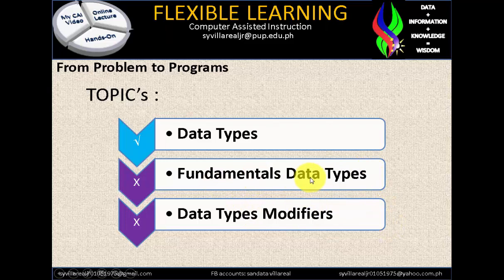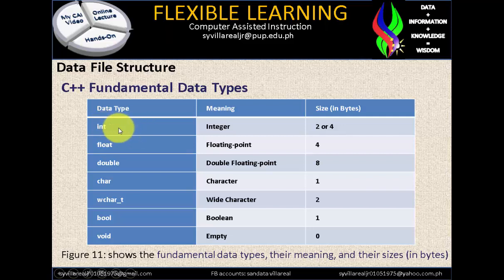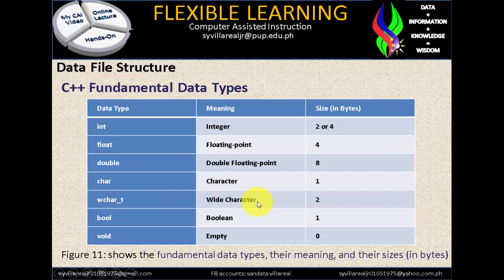Now let's move on to fundamental data types. C++ fundamental data types — the figure here shows the fundamental data types, their meaning and their size in bytes. We have: int (integer), float (floating point), double (double floating point), char (character), wchar_t (wide character), and bool (boolean).